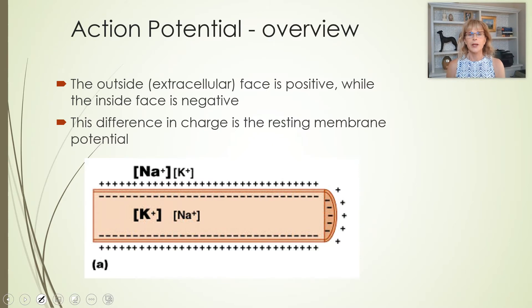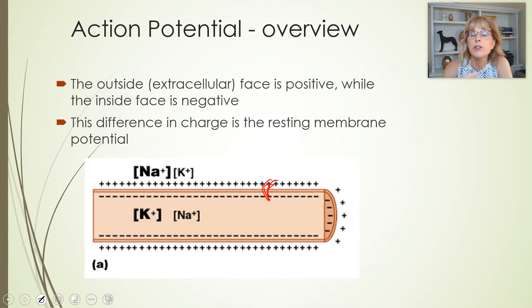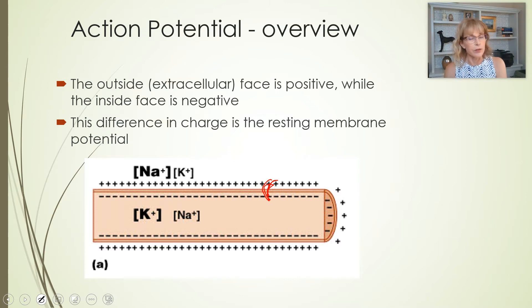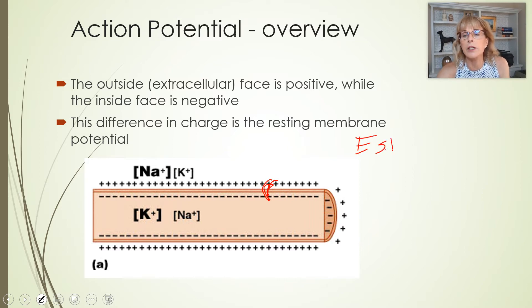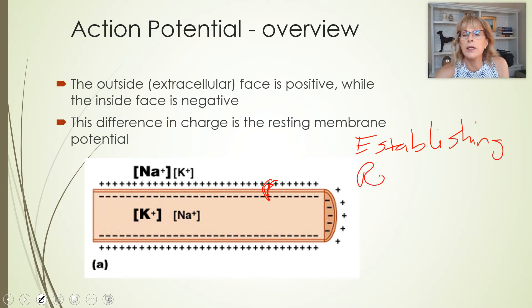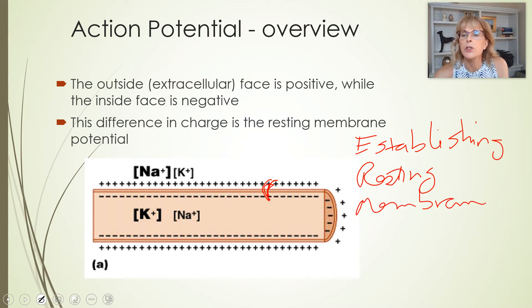All of your cells are relatively negative on the inside and positive on the outside, and this difference is called the potential. Setting this up so that your neurons are negative on the inside and positive on the outside is called establishing the resting membrane potential — setting it up so that things are more negative on the inside and more positive on the outside.